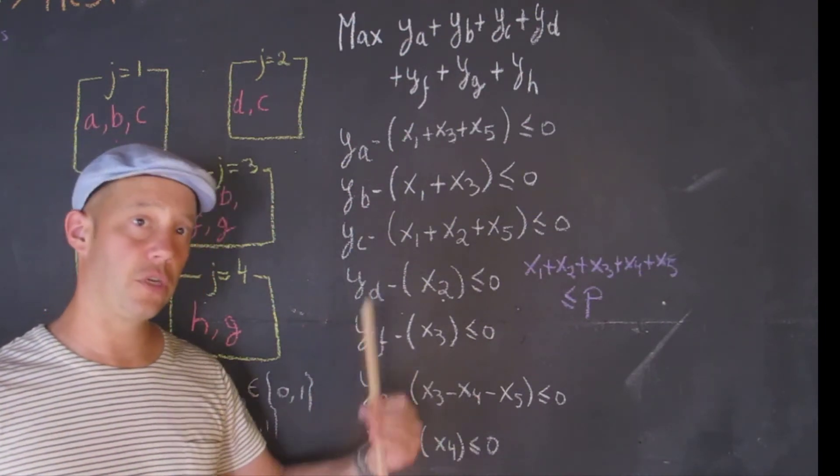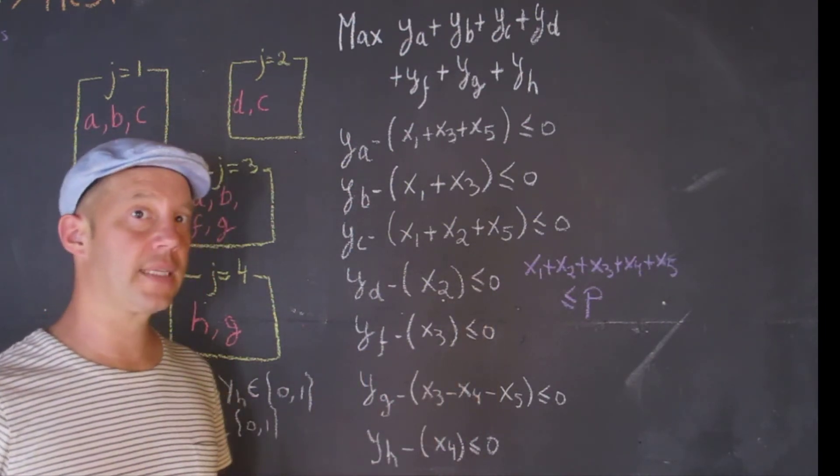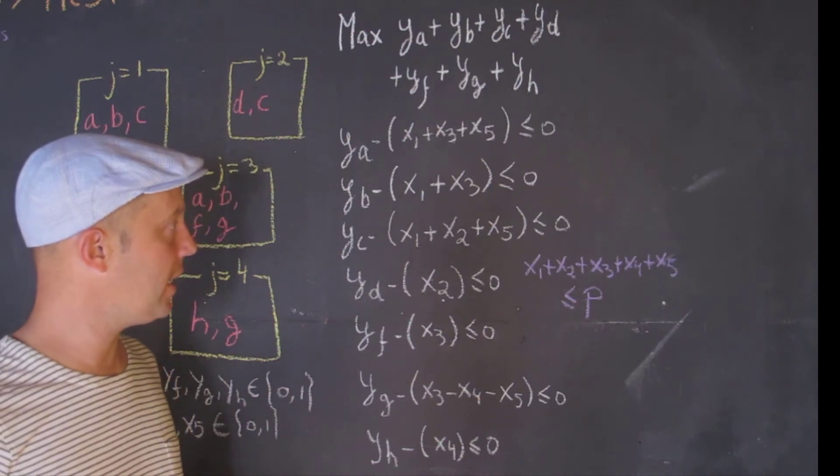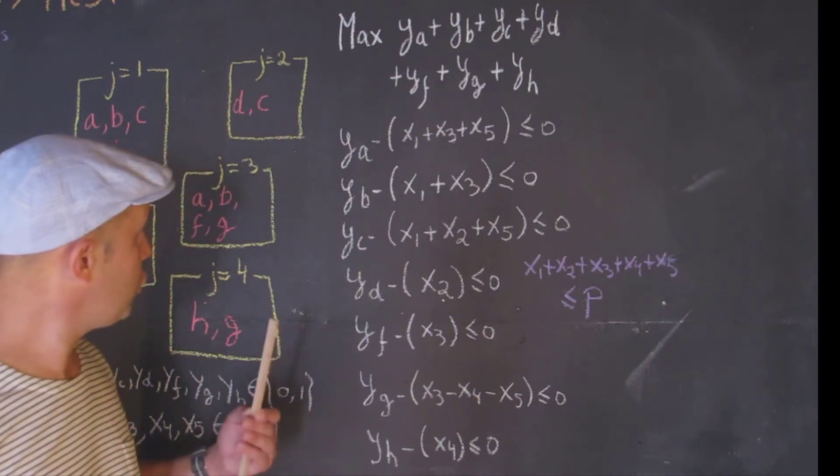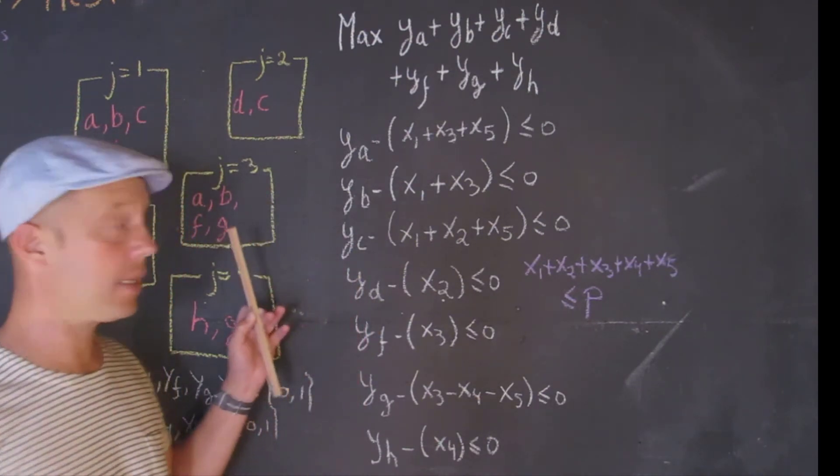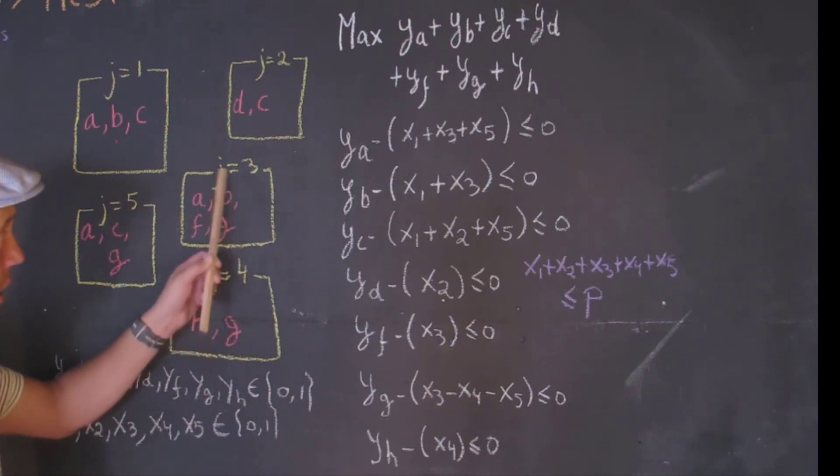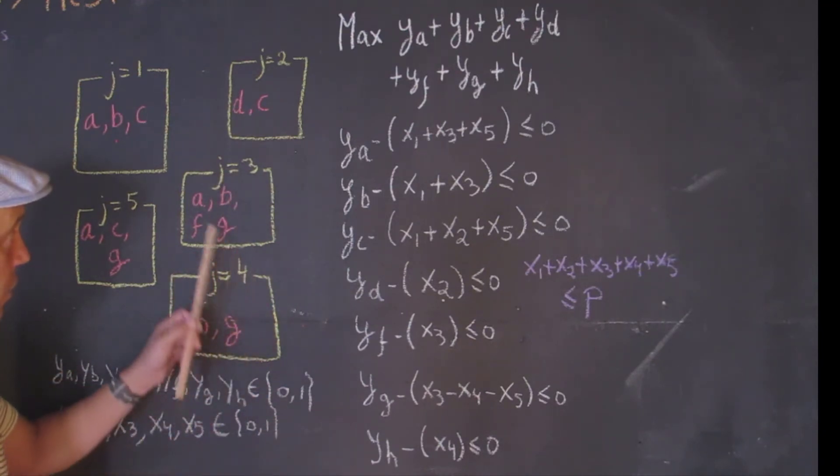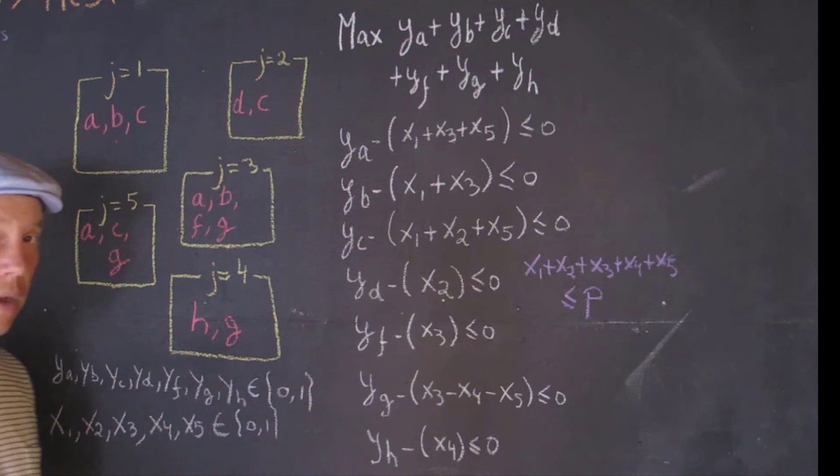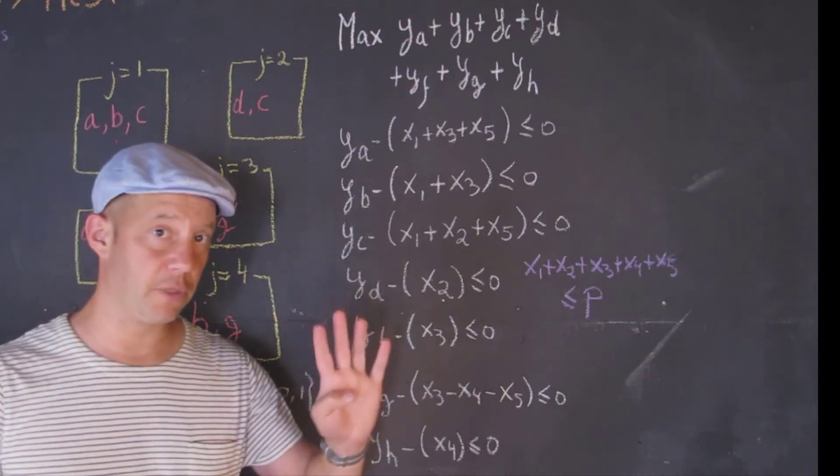And this is where we're going to try to solve this problem within CPLEX and find a solution. But by just looking here already, I can almost guarantee you that if we only have one parcel that we can set aside, it's most likely going to be J equal three, because you could then set aside a parcel that would present four different species.